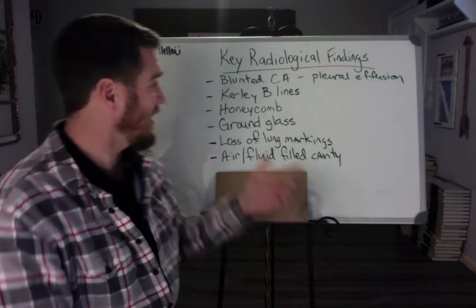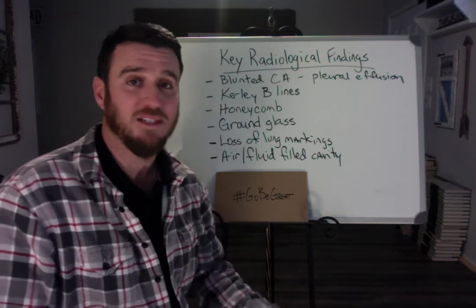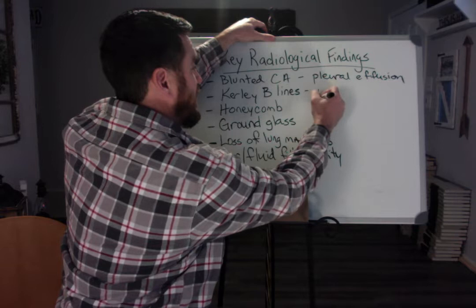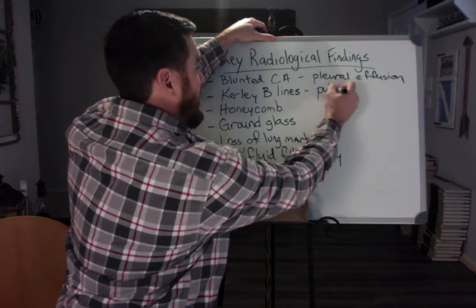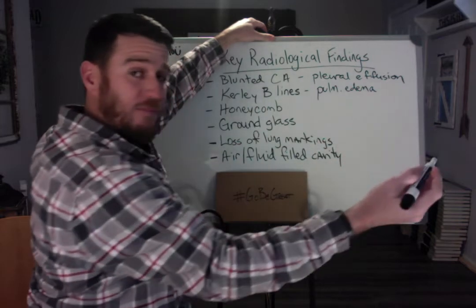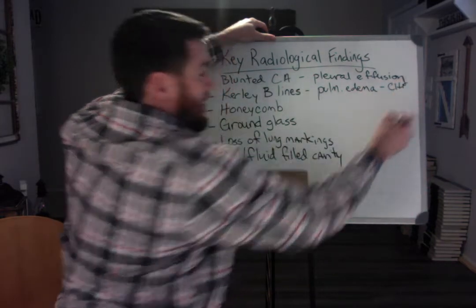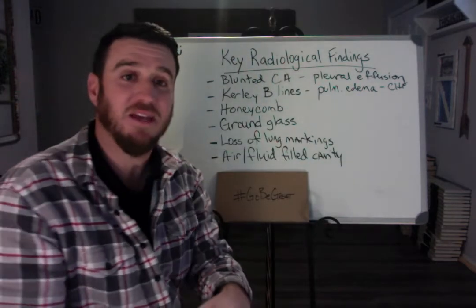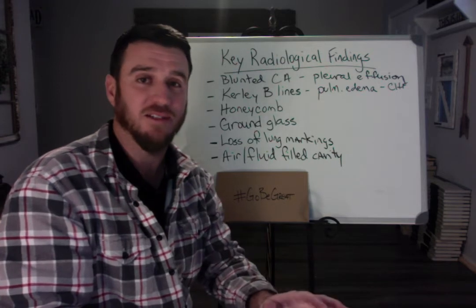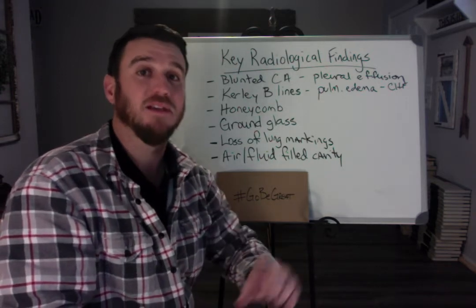The second one is Kerley B lines. Kerley B lines are associated with one disease process and one disease process only, and that is pulmonary edema, which often is tied back to congestive heart failure. When you take your exams, this may be expressed as cardiogenic pulmonary edema — however it's stated, you know you're talking about pulmonary edema.